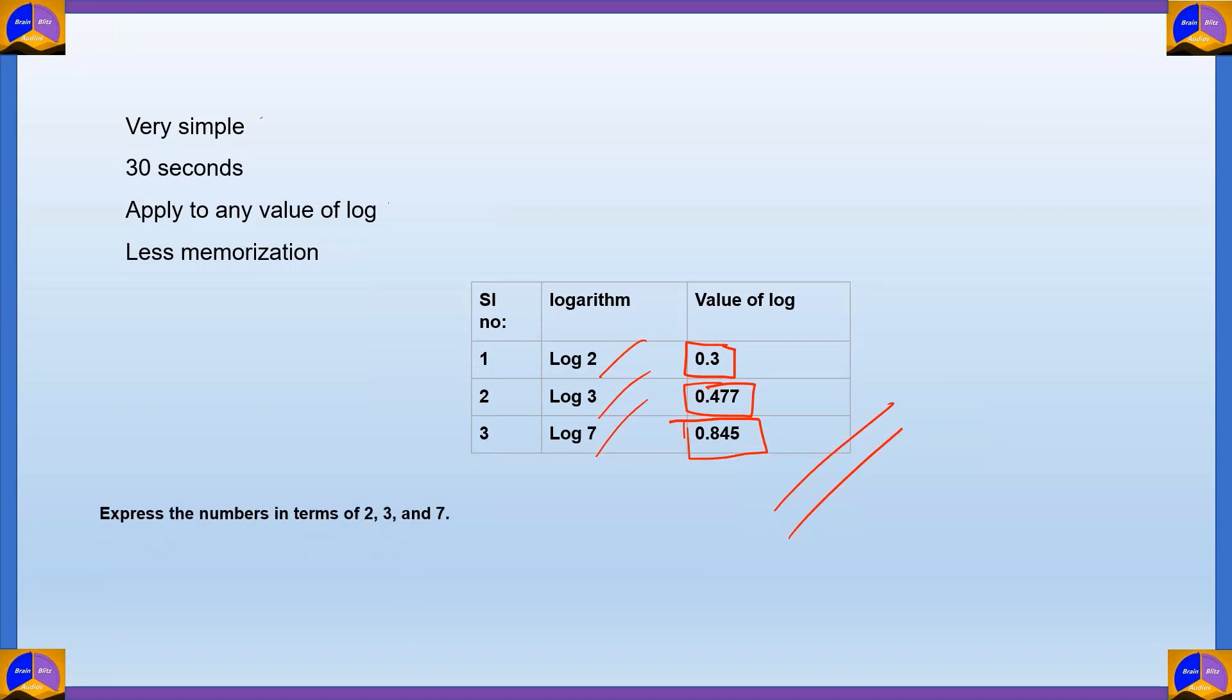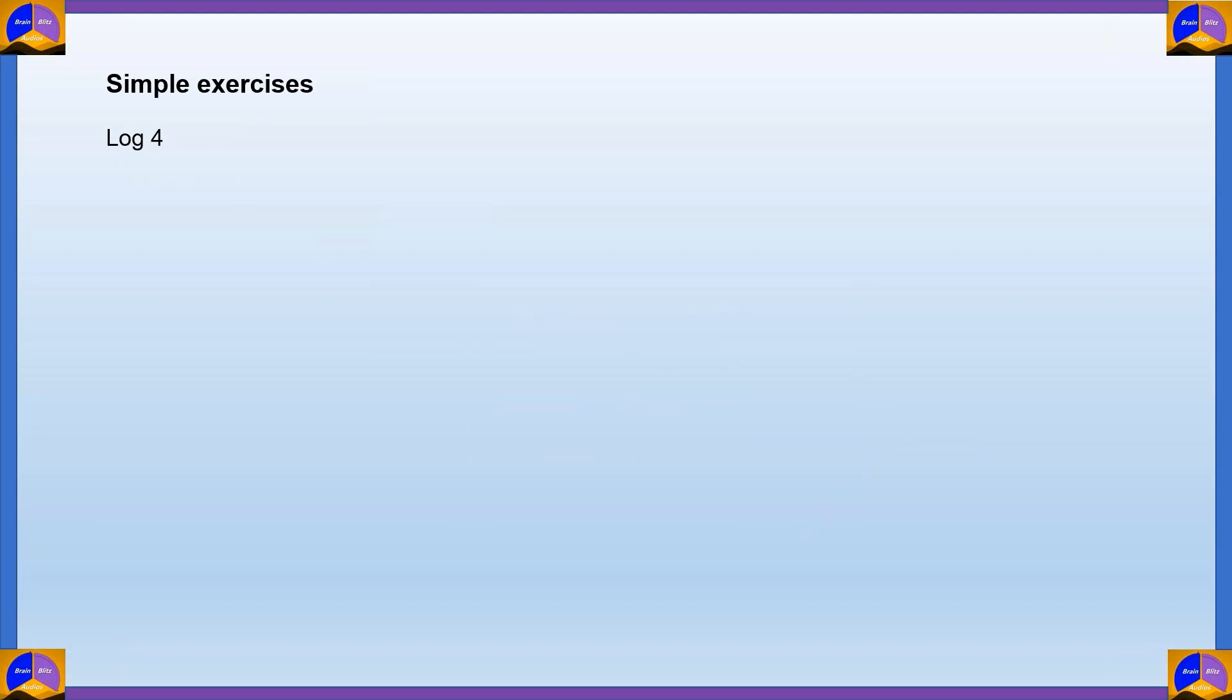Let's test out my hypothesis. In order to simplify any logarithm function, we need to express the number in terms of 2, 3, and 7. And then you can apply log 2, log 3, or log 7, which is the appropriate one. You can add them, you can put them in, and then you can get your answer. Simple, isn't it? Let's test out my hypothesis.